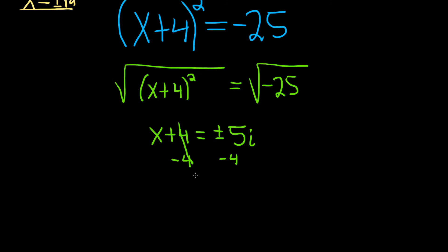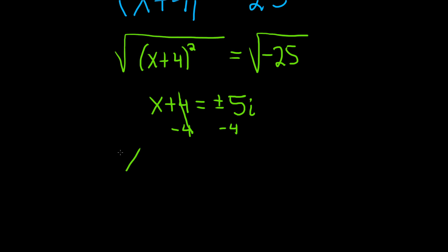So these cancel and we end up with x equals -4 plus or minus 5i. And that's it. We can't do anything else. We are completely done. I hope this video has been helpful. Good luck.